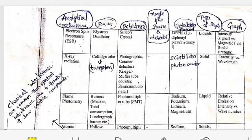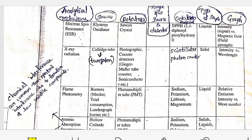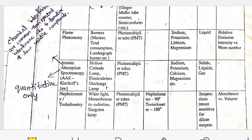In flame photometry, a burner is used as source and photomultiplier tubes are used as detectors. Sodium, potassium, lithium, and magnesium are the detecting materials. We can use solids, liquids, and gases in liquid form. The graph is relative emission intensity versus wave number.